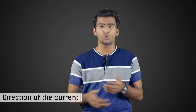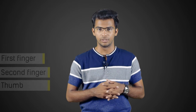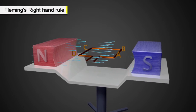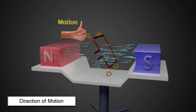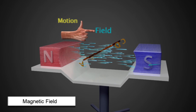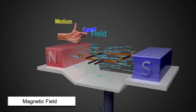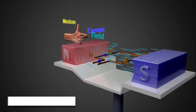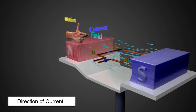So let's get to the rule. Stretch the first finger, second finger, and thumb perpendicular to each other. If you point the thumb in the direction of motion of the conductor — normally up or down — and the forefinger in the direction of the magnetic field from North Pole to South Pole, then your second finger will give the direction of current flowing through that conductor.